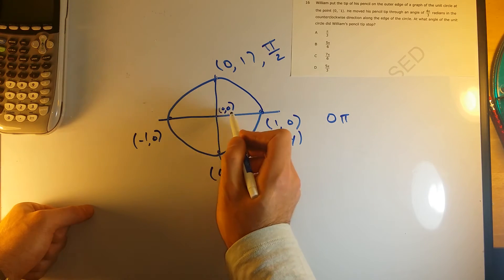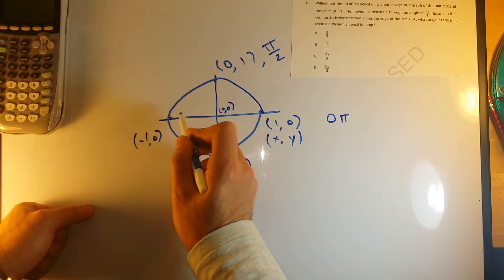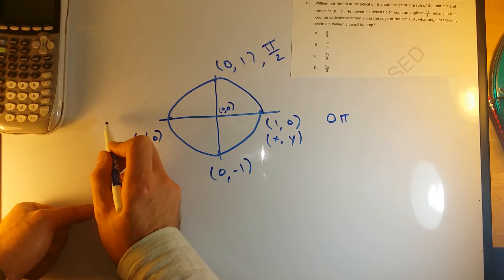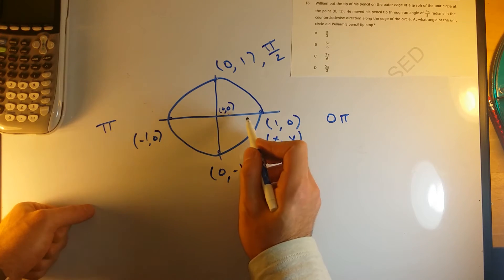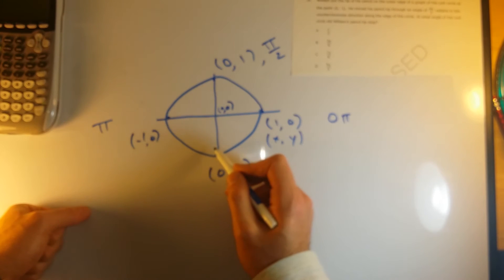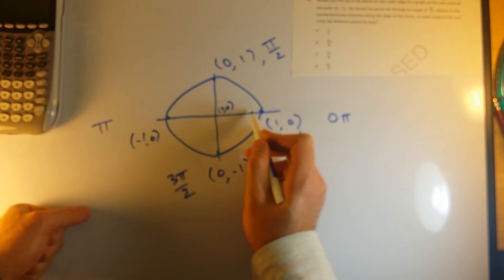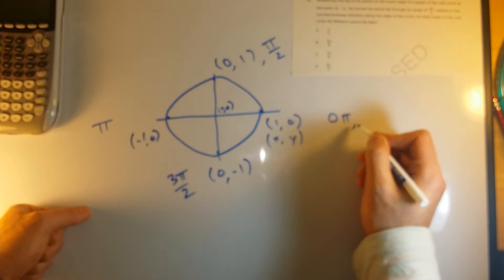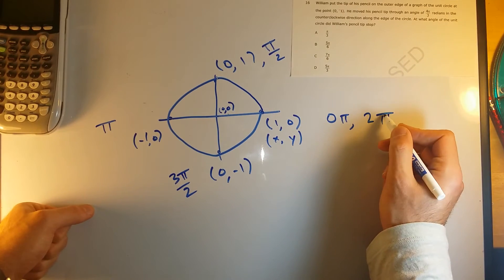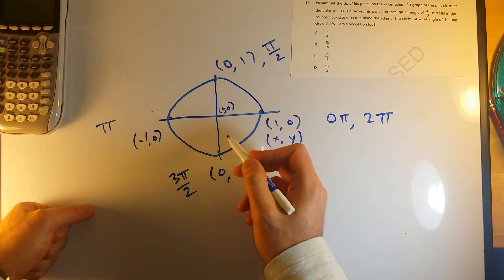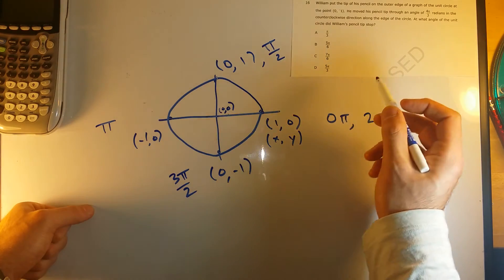If we go 270 degrees around or in radians we call that 3π over 2, or all the way around, this would be 360 degrees or we say 2π radians. So these are just the markers for that.